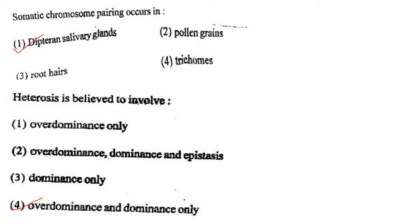Next one: Heterosis is believed to involve option 1, over dominance only; option 2, over dominance, dominance and epistasis; option 3, dominance only; option 4, over dominance and dominance only. Answer is option 4: over dominance and dominance only.